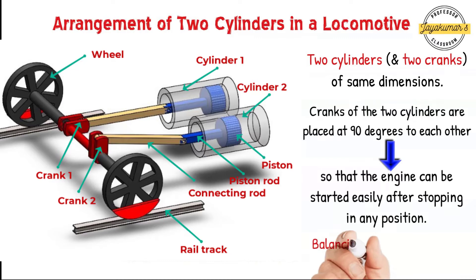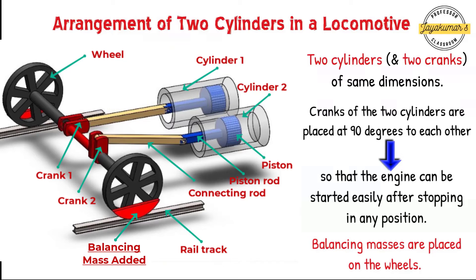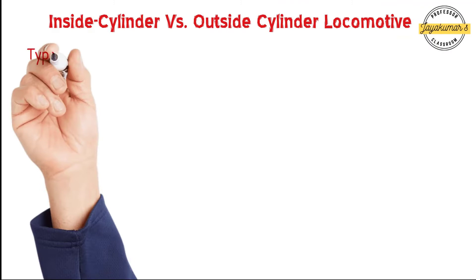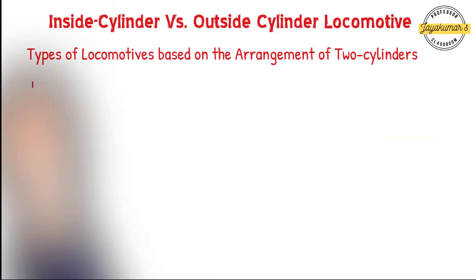Since the locomotive involves rotating driving wheels as well as two reciprocating engines, there will be some unbalance. After due process, balancing masses will be added — usually on the rims of the driving wheels. Locomotives can be classified based on the arrangement of two cylinders as inside cylinder locomotives and outside cylinder locomotives.